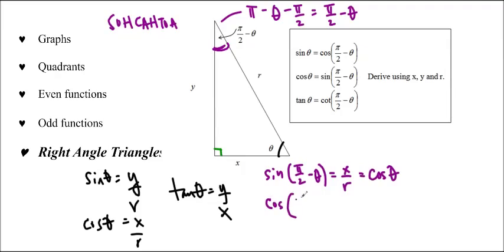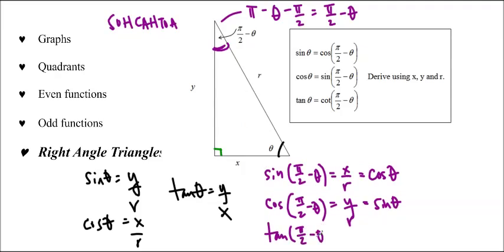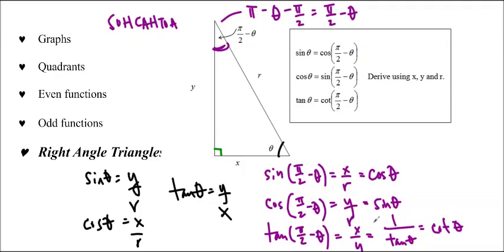Cos of pi over 2 minus theta equals y over r — the adjacent over the hypotenuse — which is sine theta. And tan of pi over 2 minus theta equals x over y, which is 1 over tan theta, or in other words, cot theta. We can reverse that as well, so tan theta equals cot of pi over 2 minus theta. Those are the rules for the co-function identities.